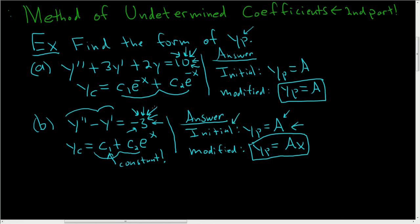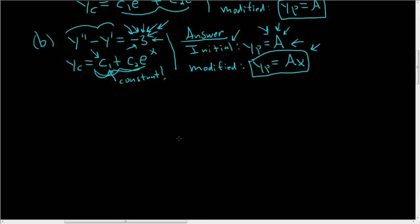So first you make your initial. When you're making the initial guess, you only look here where all the arrows are pointing. Then you look at the homogeneous solution and then you ask yourself, is there repetition? Do the terms in y p appear in y c anywhere? They do. Here we have a constant. So we need to modify it by multiplying it by x. You do that so that the solutions are linearly independent.